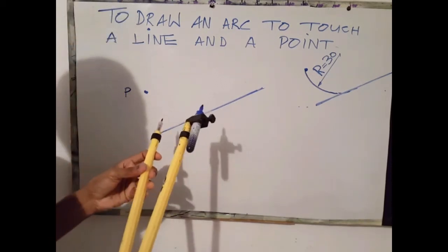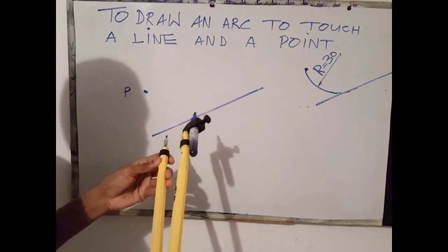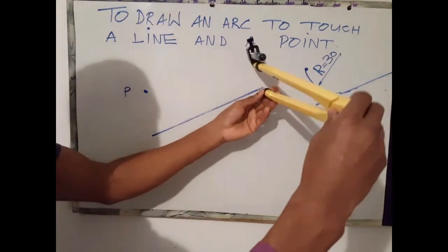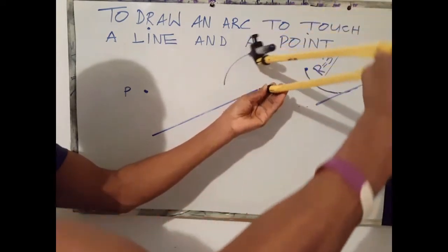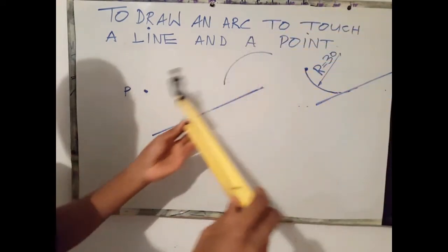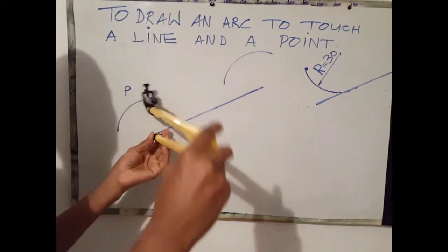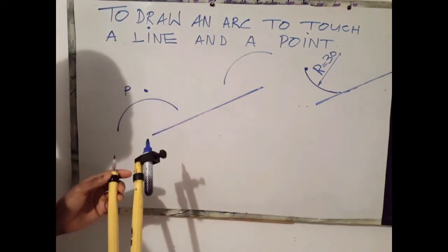Open your compass to 30 millimeters. Next step is to draw your parallel line. First arc, second arc.